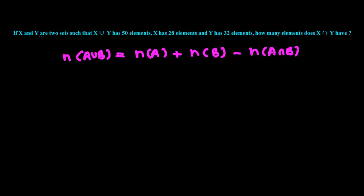Here the question is if X and Y are two sets such that X union Y has 50 elements, so the total number of elements in set X union Y is 50. And X has 28 elements, so n(X) = 28. And Y has 32 elements, so n(Y) = 32. How many elements does X intersection Y have? We need to find out the total number of elements in X intersection Y.